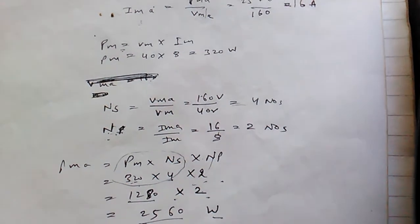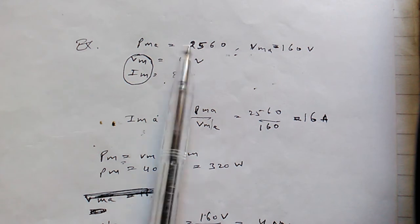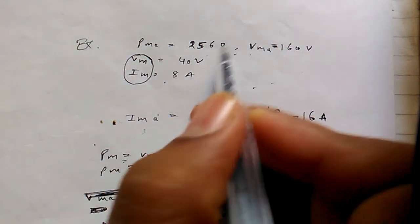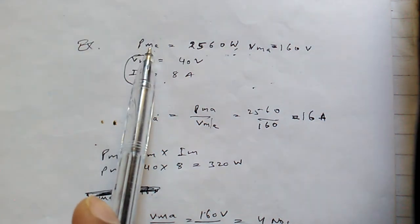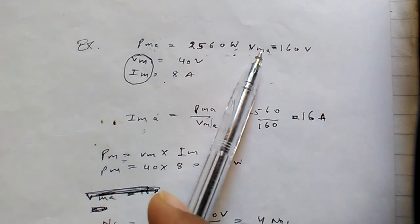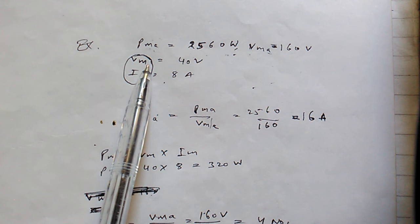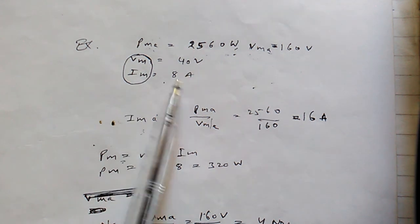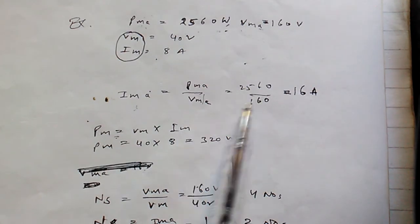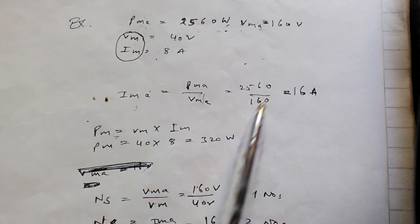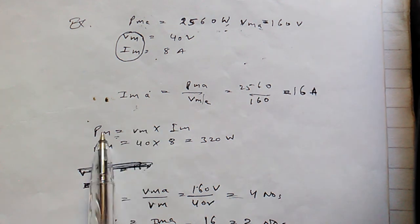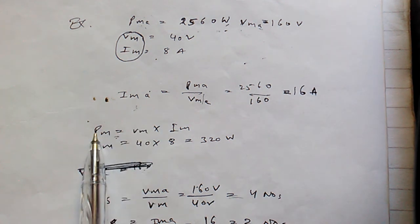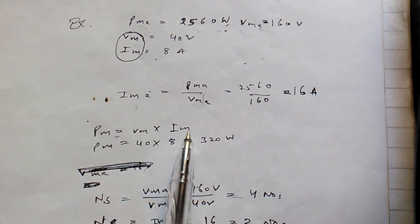Take an example: the array power at maximum power point (Pma) is 2560 watts, and the array voltage at maximum power point (Vma) is 160 volts. Module parameters are Vm = 40 volts and Im = 8 ampere. Using the formula Ima = Pma / Vma = 2560 / 160 = 16 ampere array current.